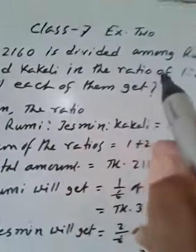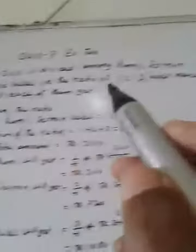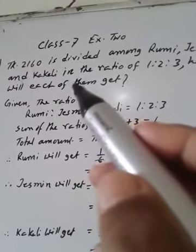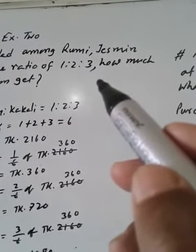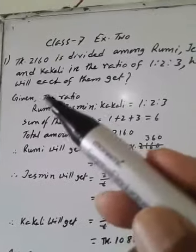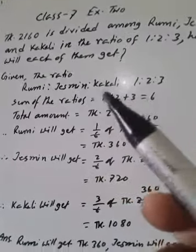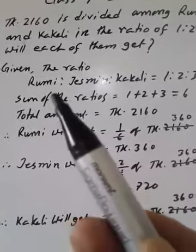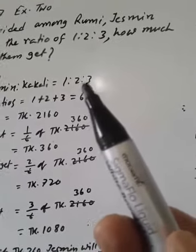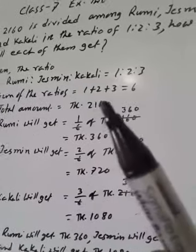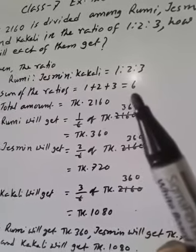Taka 2160 is divided among Rumi, Jasmine and Kakuli in the ratio of 1 to 2 to 3. How much will each of them get? Given ratio Rumi is to Jasmine is to Kakuli equal to 1 is to 2 is to 3. And sum of the ratios, 1 plus 2 plus 3 is 6.